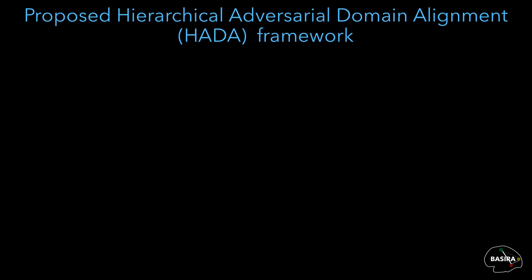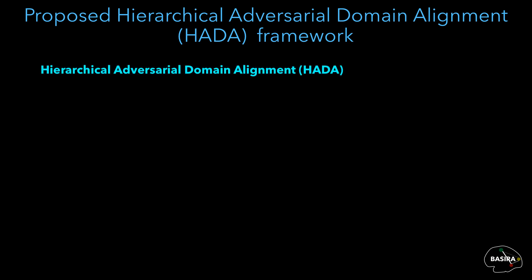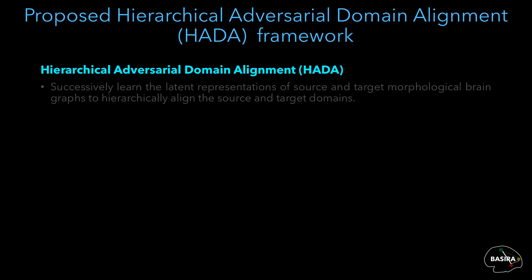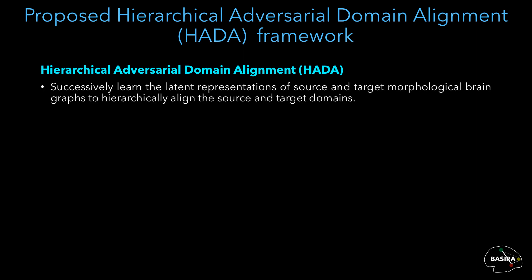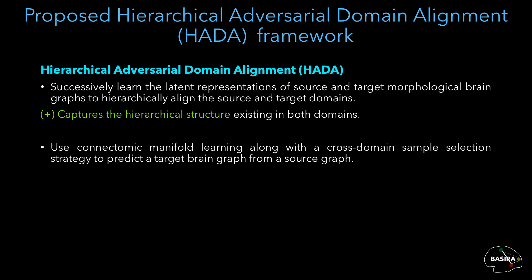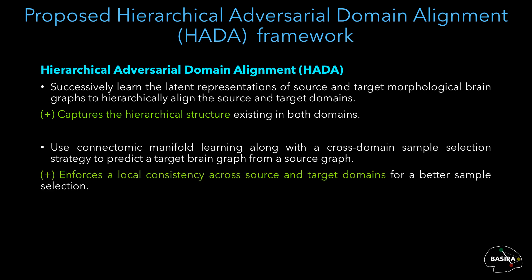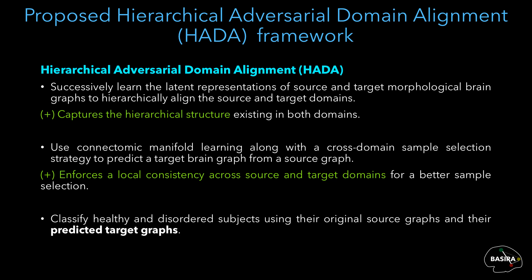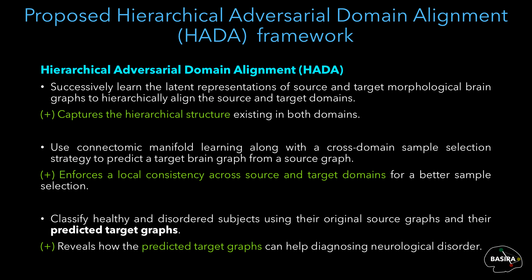To fill this gap, we propose hierarchical adversarial domain alignment, or HEDA, a GAN-based framework for brain graph prediction. First, we successively learn the latent representation of source and target morphological brain graphs to hierarchically align the source and target domains. Second, we use connectomic manifold learning and a cross-domain sample selection strategy to predict the target brain graph, enforcing local consistency across domains. Finally, we classify healthy and disordered subjects using their original source graphs and their predicted target graphs, showing how predicted target graphs can help better diagnose neurological disorders.